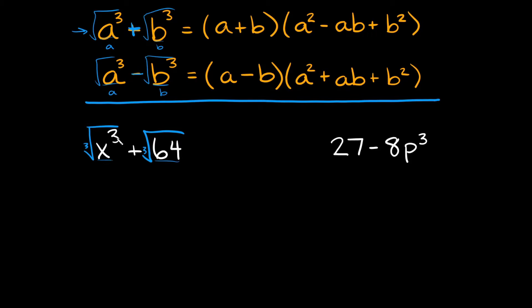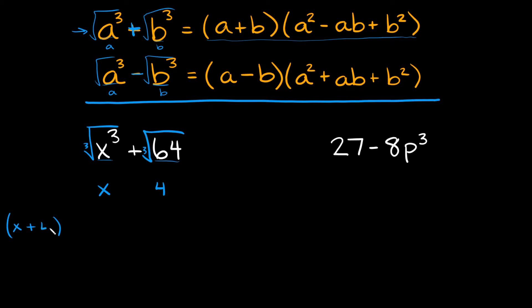If you take the cube root of x cubed, you're going to get just x. And if you take the cube root of 64, that's going to be equal to just 4. So this is my A and this is my B, and I can plug it into this formula. In the first parentheses we're going to have A plus B, so here we're going to have x plus 4.